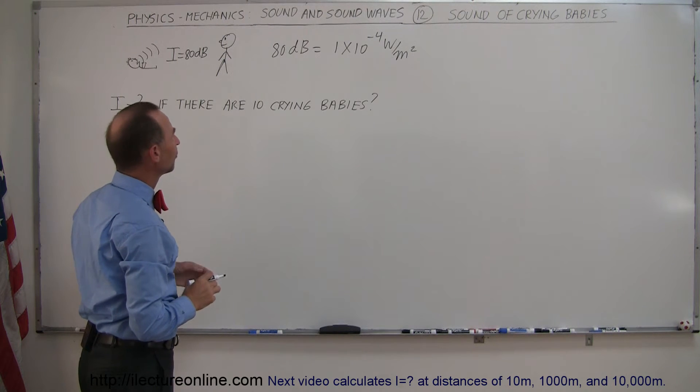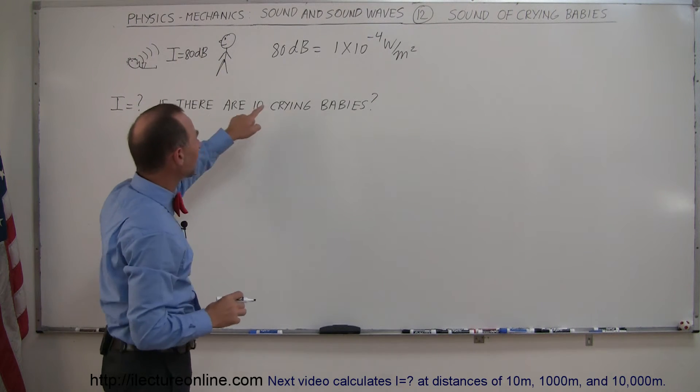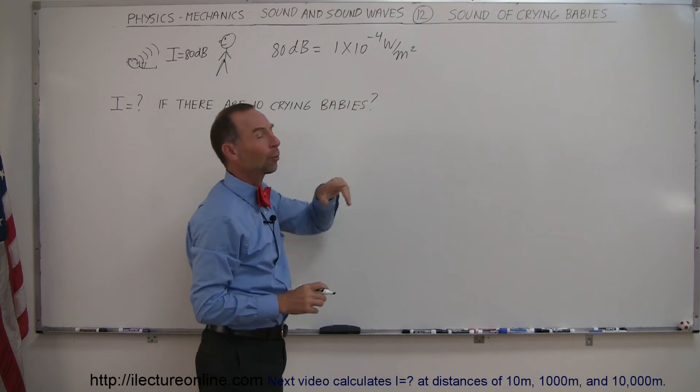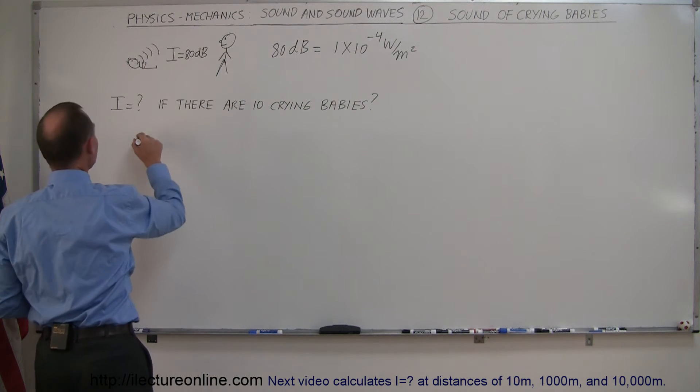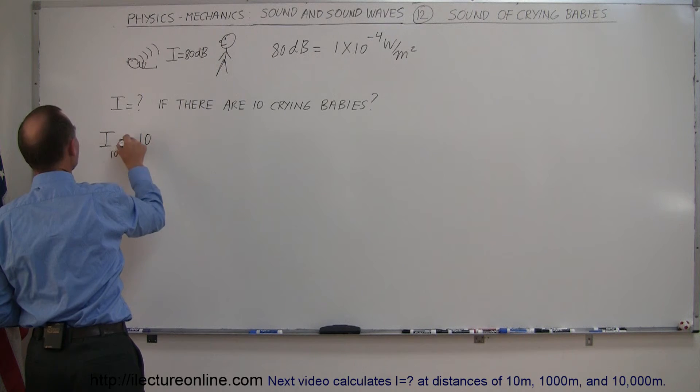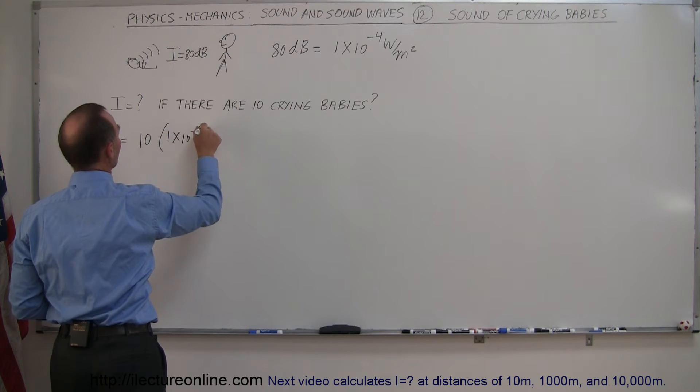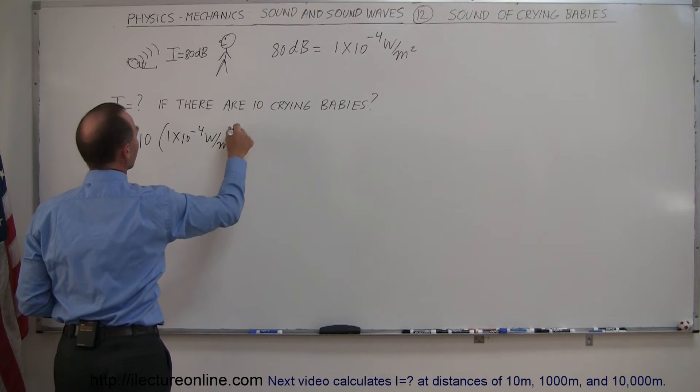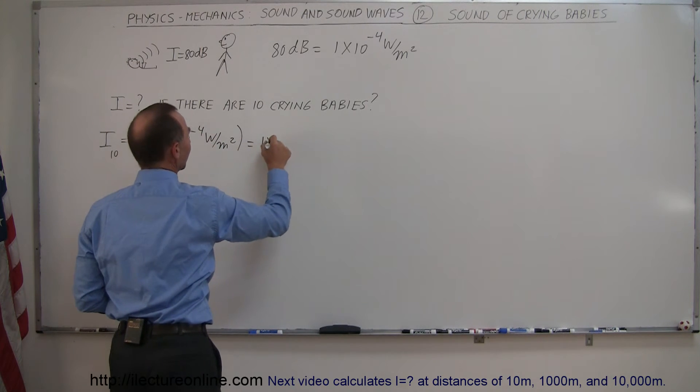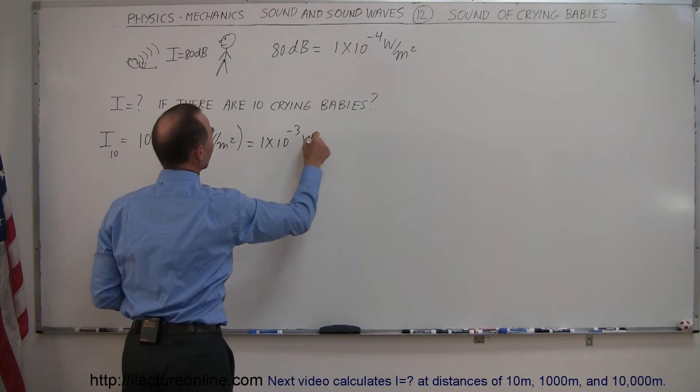Now if there are 10 crying babies, each would have an intensity of 1 times 10 to the minus 4 watts per square meter. So for 10 crying babies, the intensity is equal to 10 times 1 times 10 to the minus 4 watts per square meter, and that would equal 1 times 10 to the minus 3 watts per square meter.